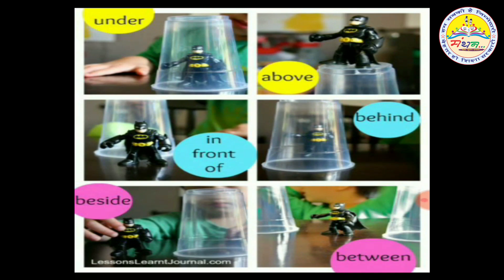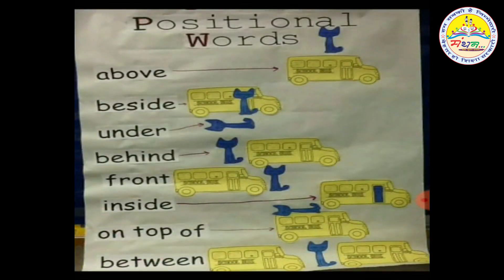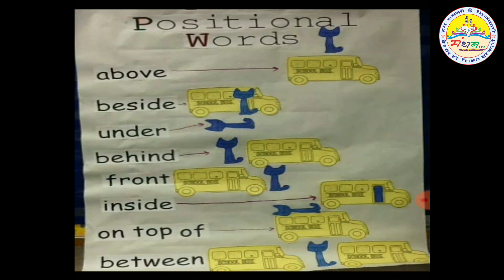Let's clear this again — positional words. You can see a cat in blue color. Where is it? Above the van. The cat is above the van.